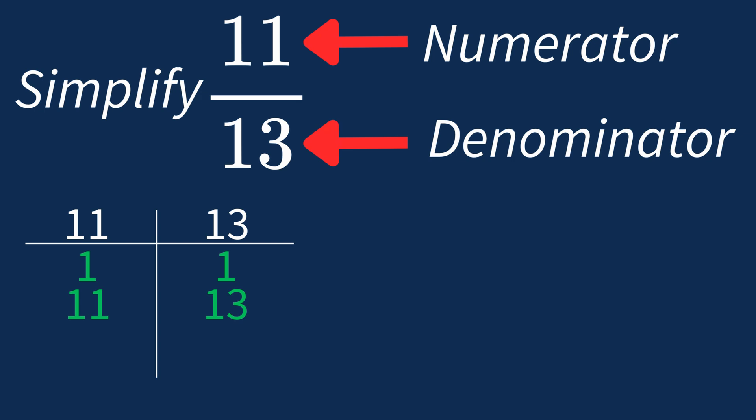So in this case, the largest common factor is 1. This means we'll divide both the numerator and denominator by 1 to see if anything changes.